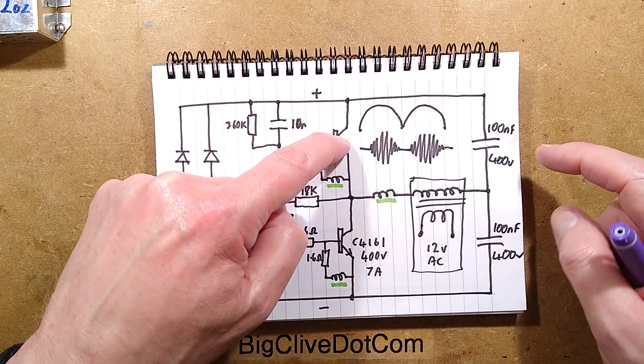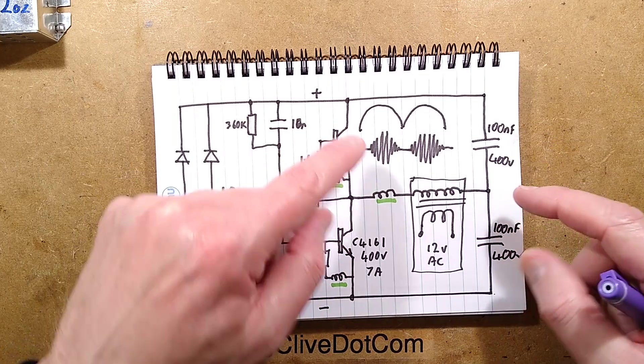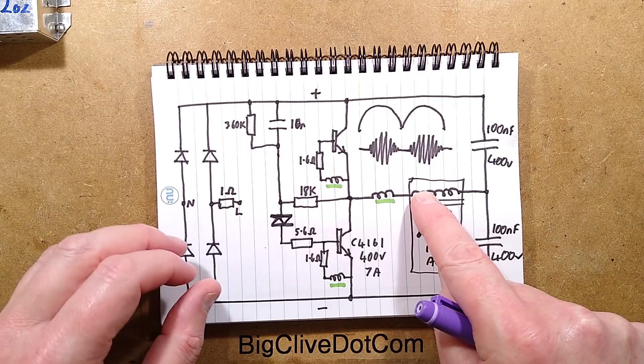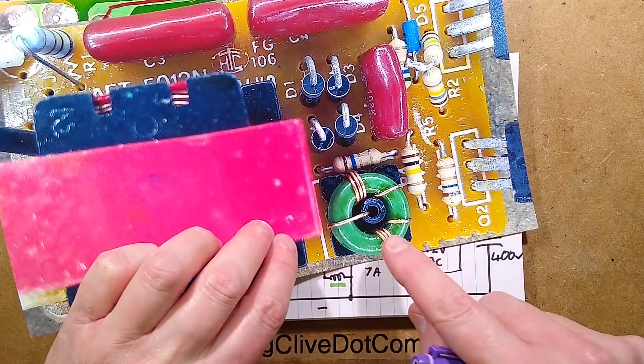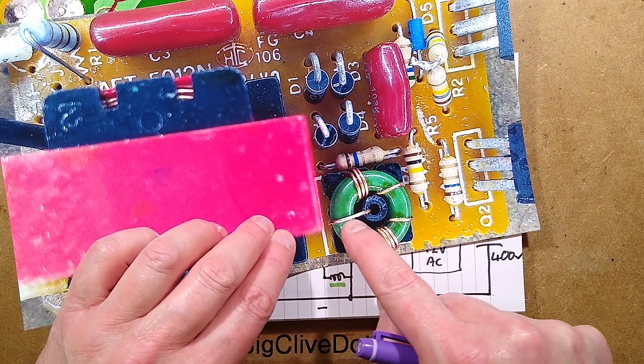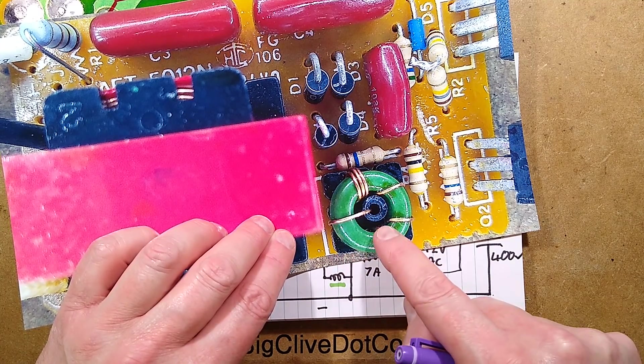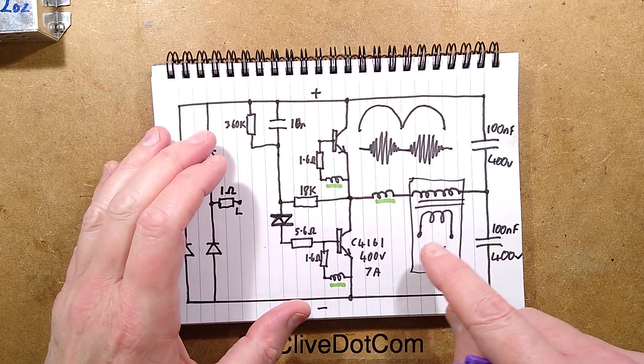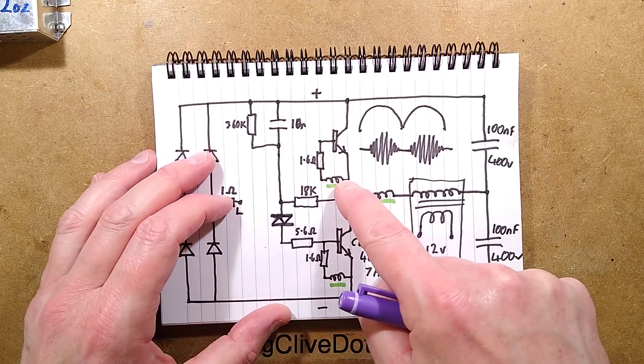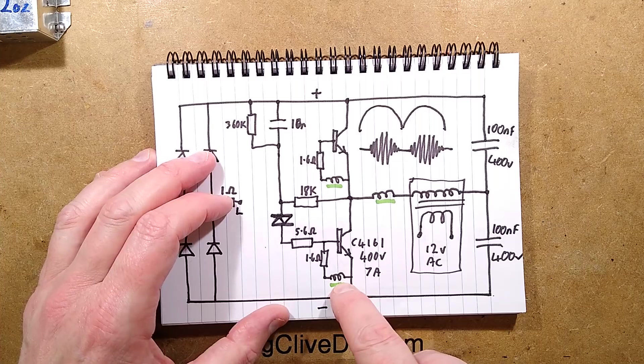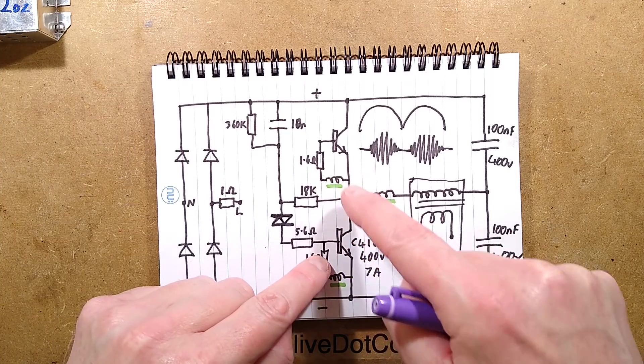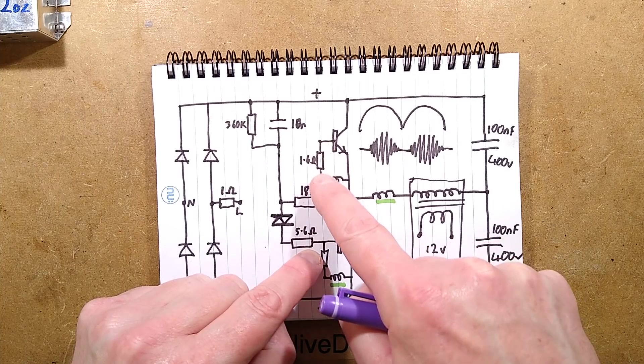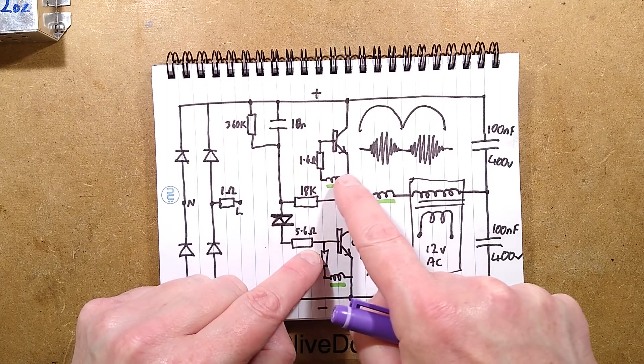When this transistor turns on it's effectively discharging this capacitor through that inductor, the transformer, but it's also charging up this capacitor. So there's sort of double capacitance involved here. This one turns on, it discharges this one, charges that one, so they're alternately charging and discharging.